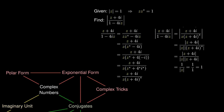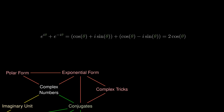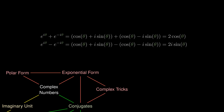Another trick the exponential form affords us is adding complex numbers. Taking e^(iθ) and adding its conjugate, using Euler's identity and simplifying gives 2cos(θ). Likewise, subtracting e^(iθ) by its conjugate and using Euler's identity gives 2i·sin(θ).